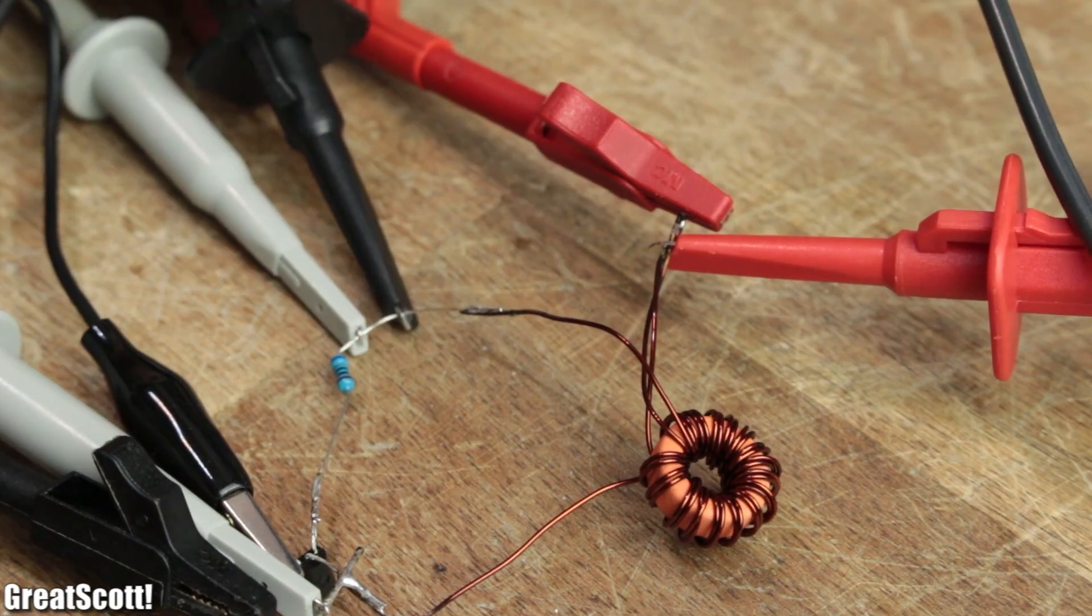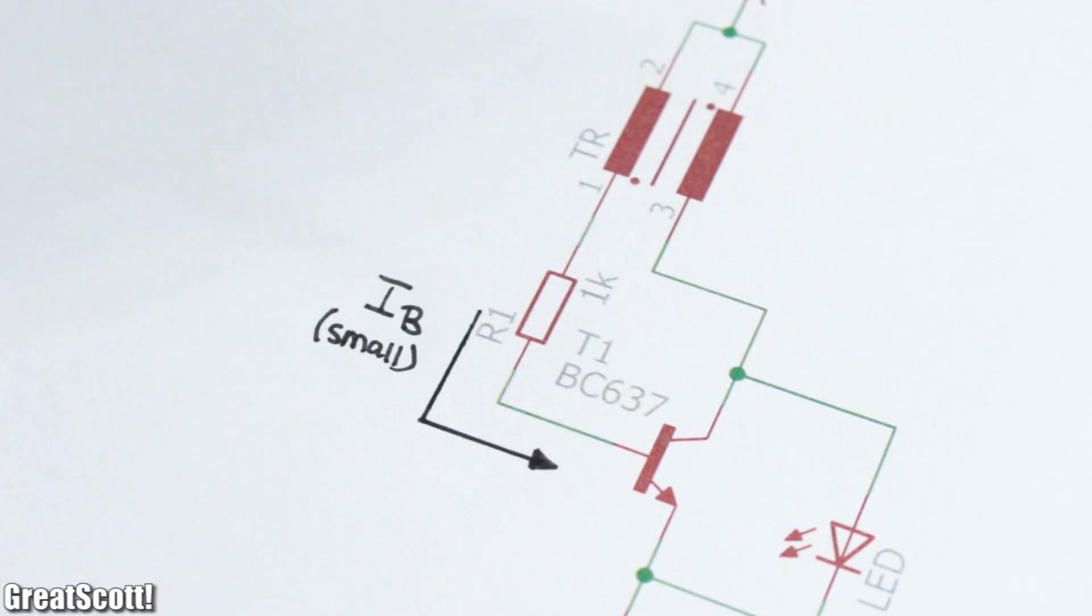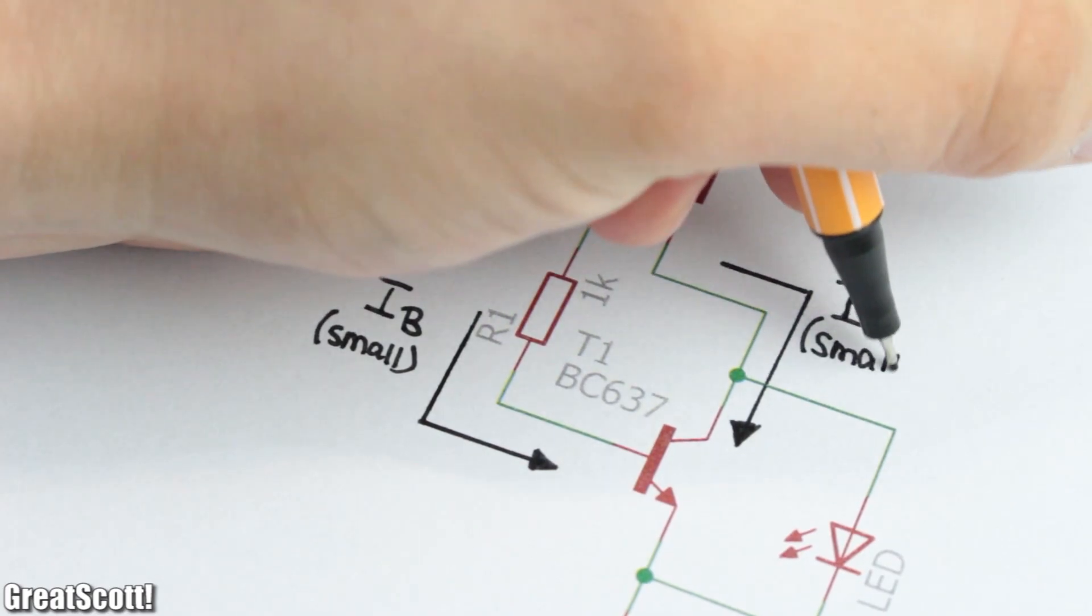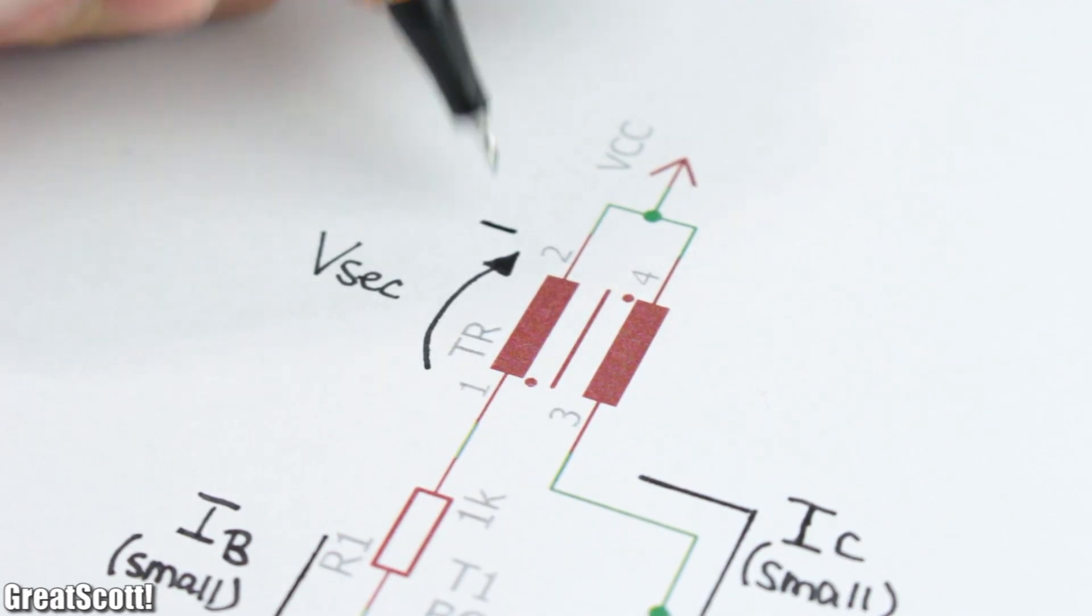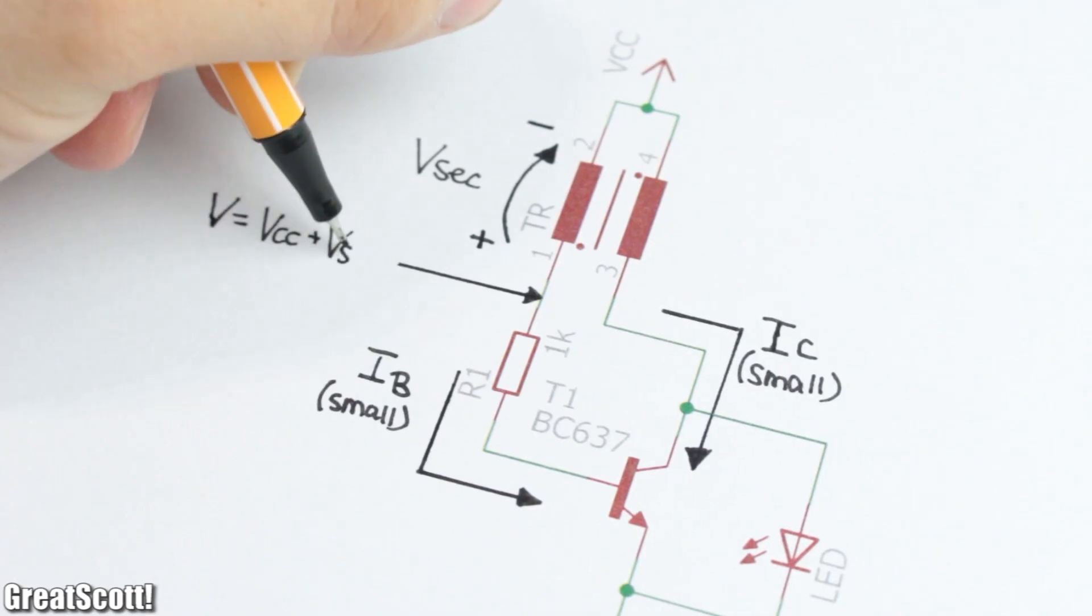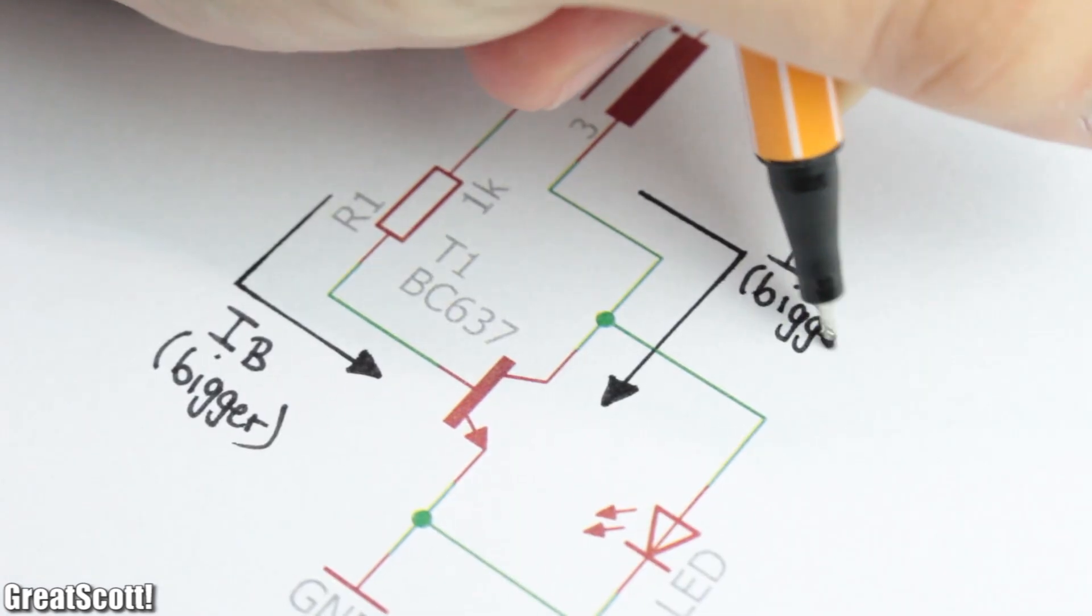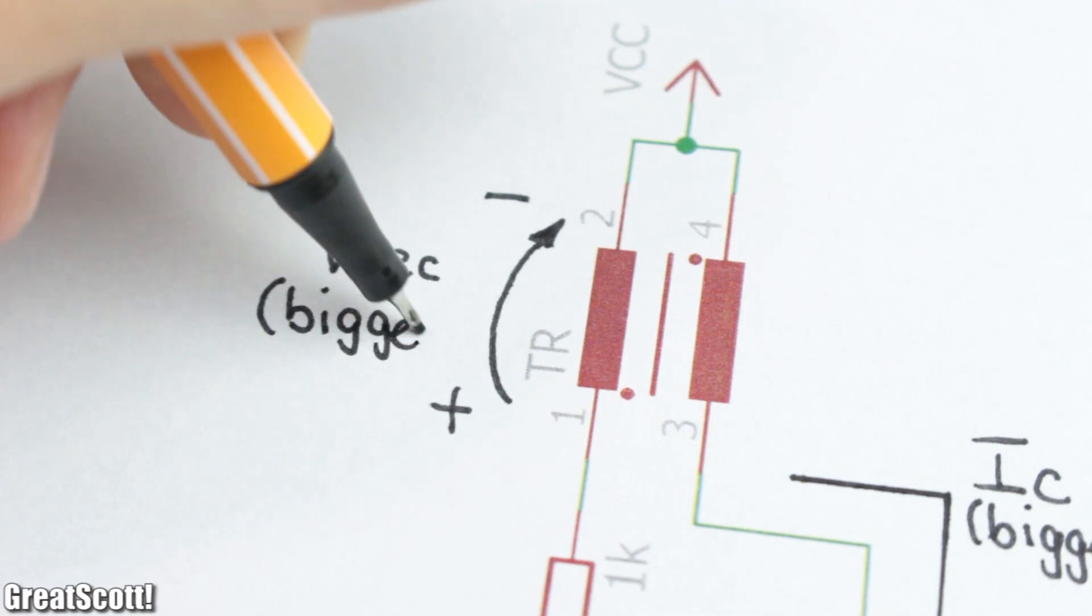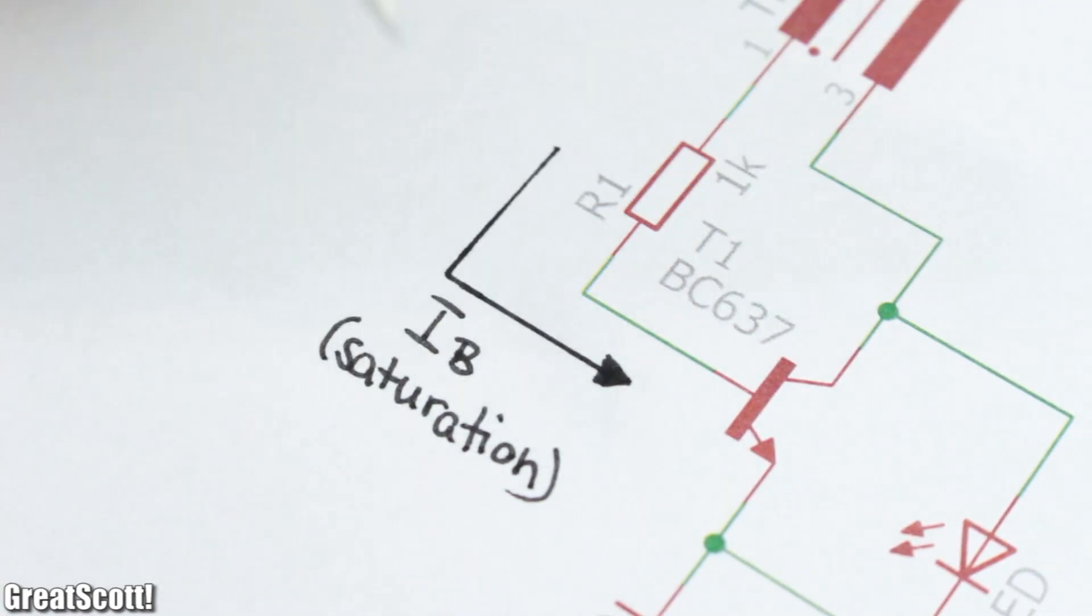In the beginning, a small amount of base current only lets a small amount of collector current flow. This collector current then induces a voltage into the secondary coil of the transformer, which is in series to the voltage source due to its reverse winding direction, and thus increases the base current, which therefore increases the collector current. This process repeats until the transistor reaches a saturation state in which the collector current rises in a linear fashion.